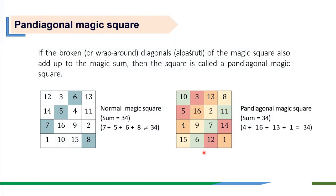Here we will see a special type of magic square called a pan-diagonal magic square. If the broken or wrap-around diagonals, known as Alpa Shruti, of the magic square also add up to the same magic sum, then the square is called a pan-diagonal magic square.